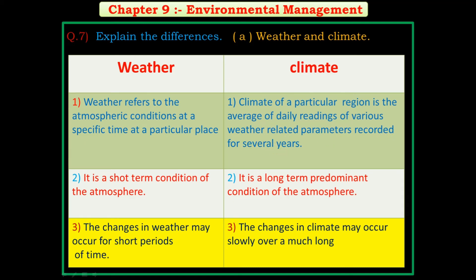Second point in weather: it is a short-term condition of the atmosphere. Second point in climate: it is a long-term predominant condition of the atmosphere. Third point in weather: the changes in weather may occur for short periods of time. Third point in climate: the changes in climate may occur slowly over a much longer time.